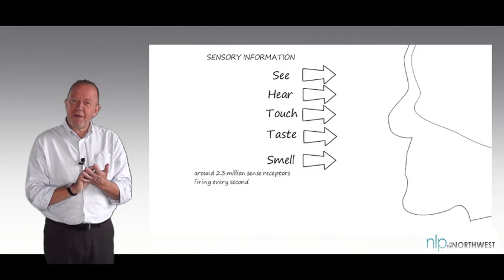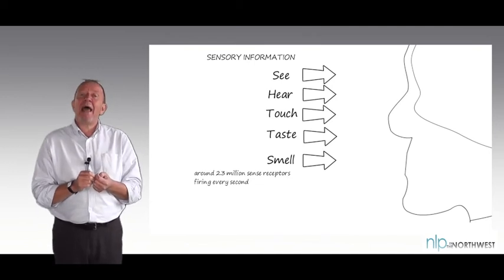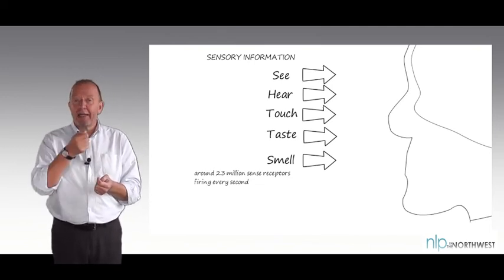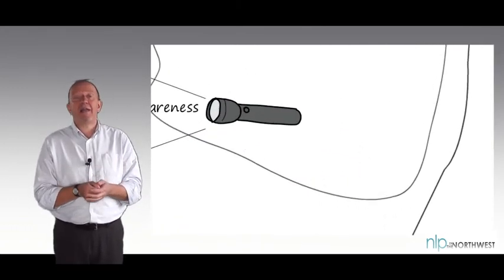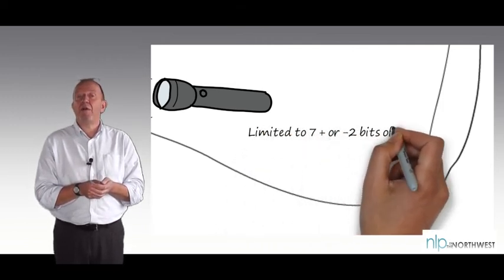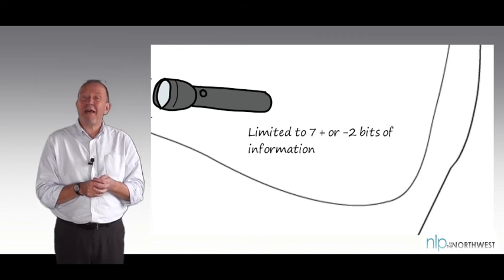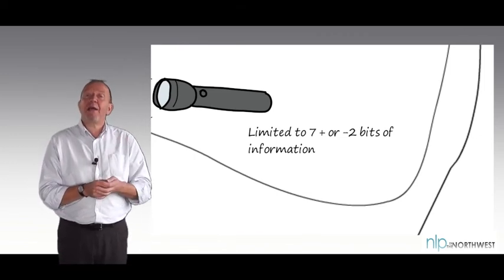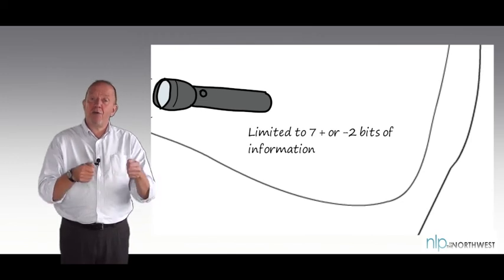Whatever you're paying conscious attention to from the outside world, it isn't the whole of the outside world. The way we like to describe it on NLP courses is that your conscious attention is like a torch beam in a darkened room. Whatever you're shining your torch beam on, you think that's external reality — but somebody else might be shining their torch beam on something very different. You may have had that experience in your life: you're talking about something assuming the other person is aware of it, but actually their attention is on something else. So whatever I'm paying attention to and whatever you're paying attention to, we can't guarantee that our torch beams are overlapping.